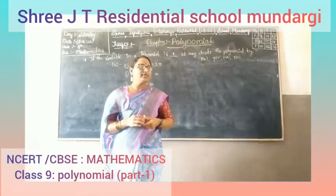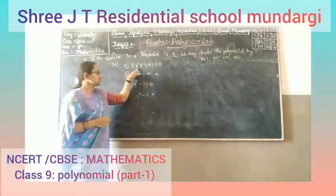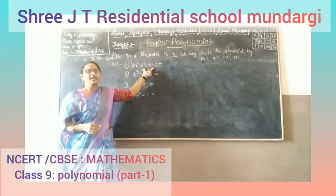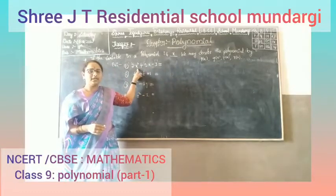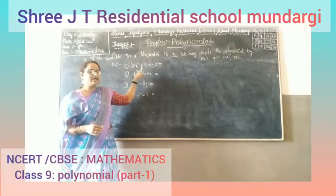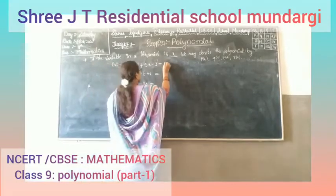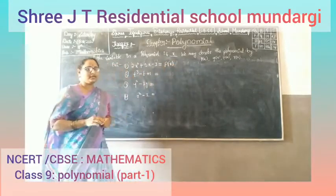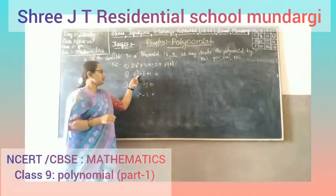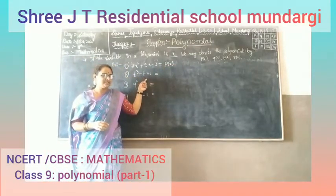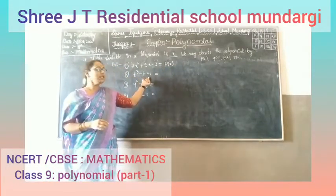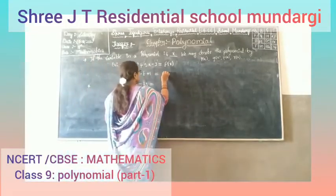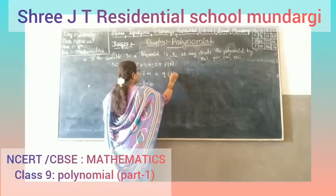For example, take the polynomial 2x squared plus 5x minus 3. The variable is x, so this polynomial is written as P of x. Second example: the polynomial t cubed minus 3t plus 1 has variable t, so it is written as Q of t.